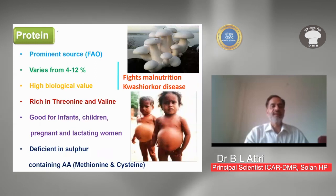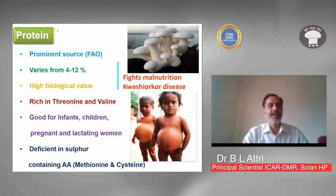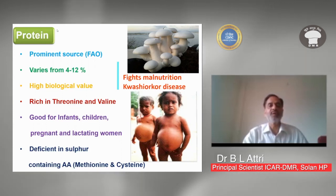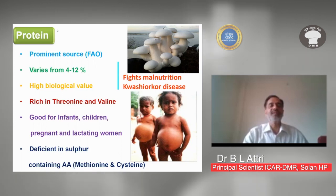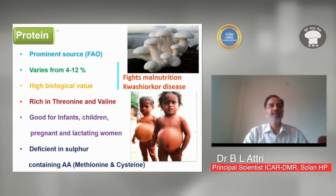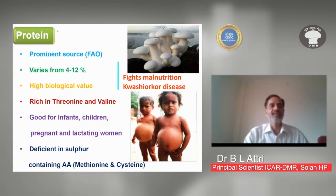On a fresh-weight basis, protein varies from 4 to 12% with high biological value — about 80 to 90% of the protein is absorbed in the body. By comparison, protein from pulses is not 100% absorbed. Mushrooms are rich in threonine and valine, which are particularly good for children, pregnant, and lactating women.